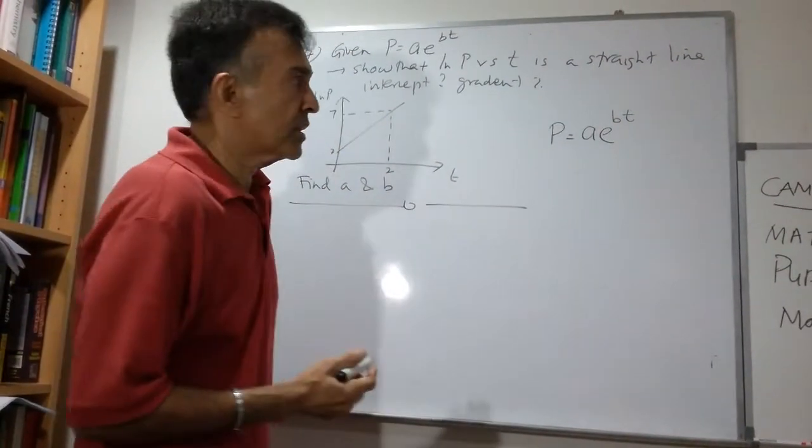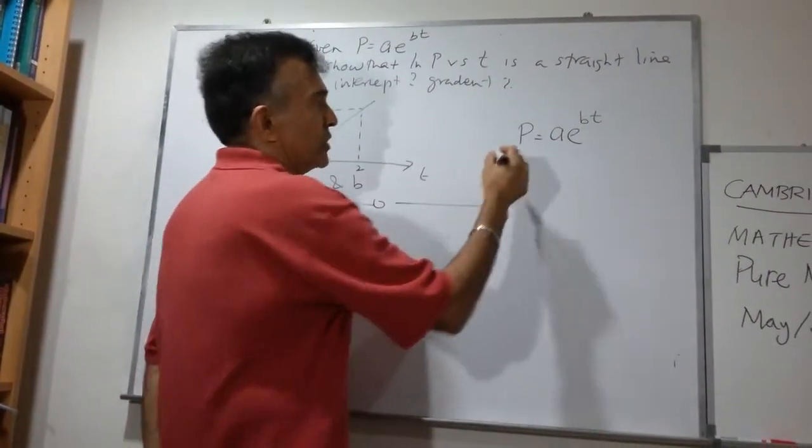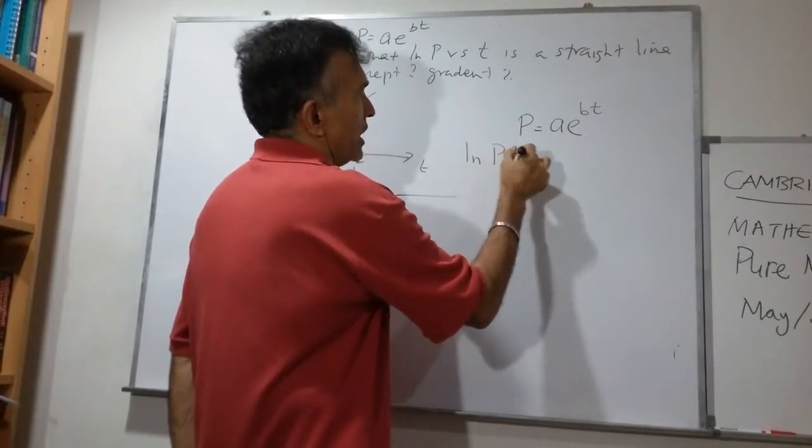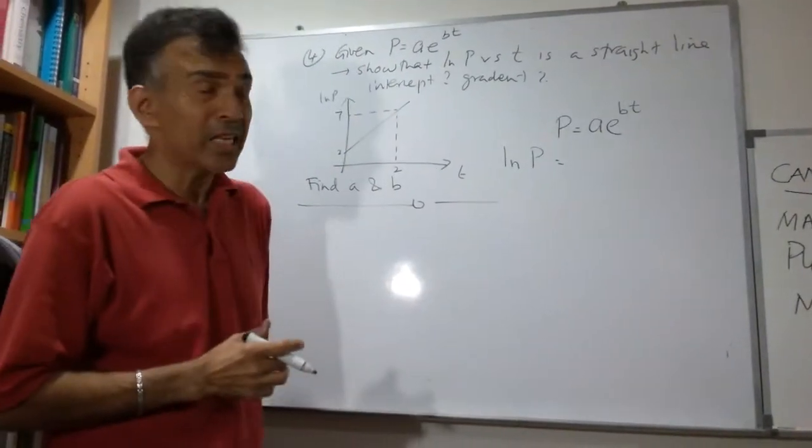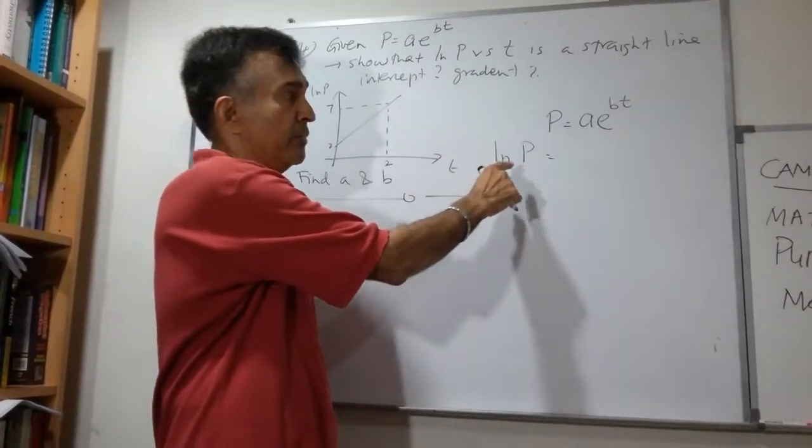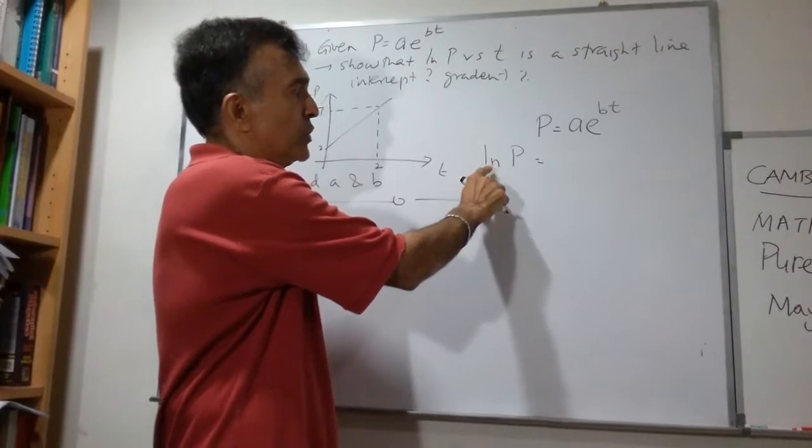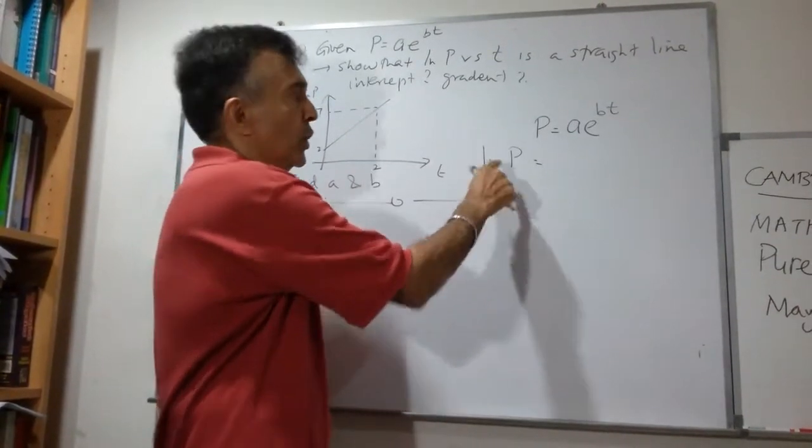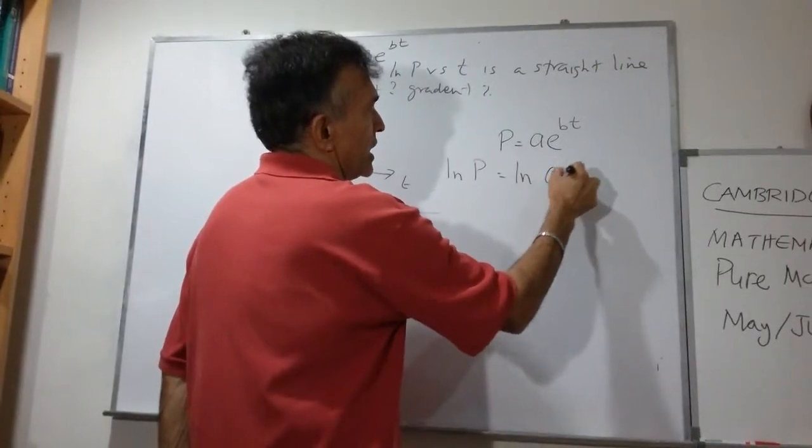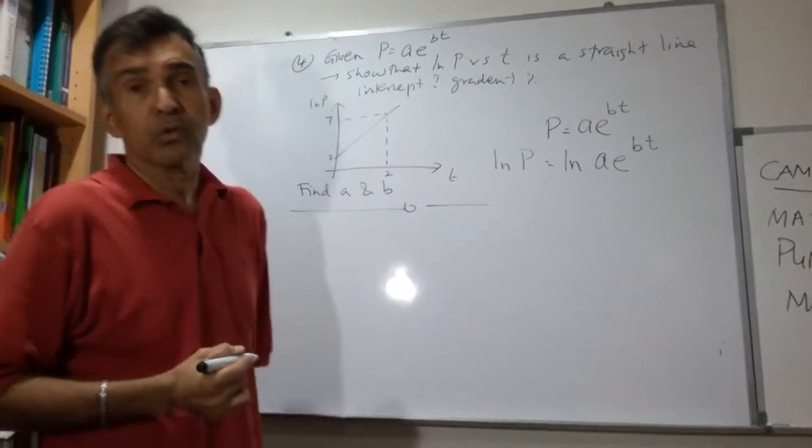Let's do some logs. P equals to A times E to the power of BT. So let's take logs to both sides. I'm taking logs to base E, so I'll use the word ln for this. I'm going to pronounce this as ln. So ln P equals to ln of A times E to the power of BT. Let's take logs to both sides.